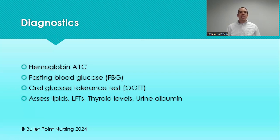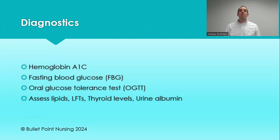Beginning with diagnostics — how do we diagnose a patient with type 2 diabetes? We can do that with a hemoglobin A1c, and the number we're usually looking for is greater than 6.5, though some places say greater than 7. We're also looking for a fasting blood glucose, usually above 126 as the cutoff. And then an oral glucose tolerance test — the most common place to see this is when we test for gestational diabetes around 20 to 24 weeks of pregnancy, with a number greater than 200.